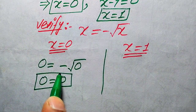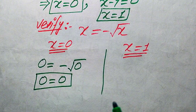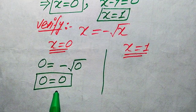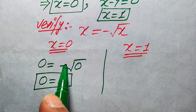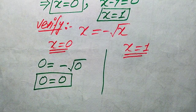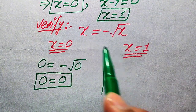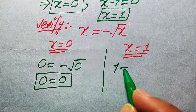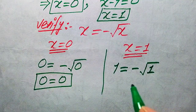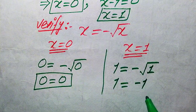We get zero equals zero, because zero has a neutral sign — the negative sign does not affect zero. So zero equals zero, which shows that X equals zero satisfies our given equation. Now we verify X equals 1 by substituting on both sides. It becomes 1 equals minus times square root of 1, and we get 1 equals minus 1.